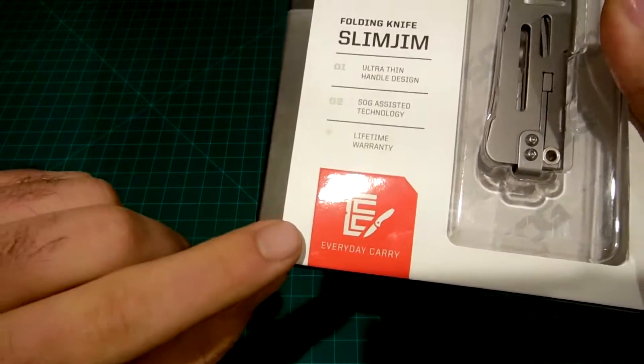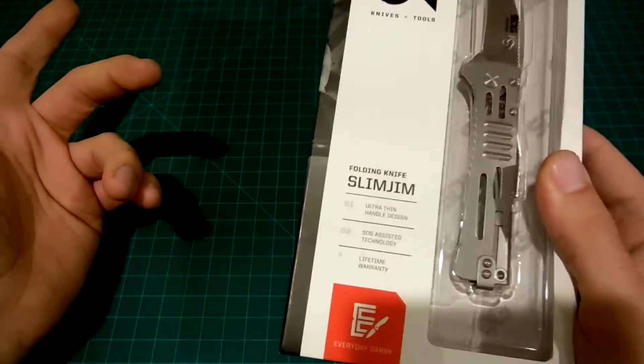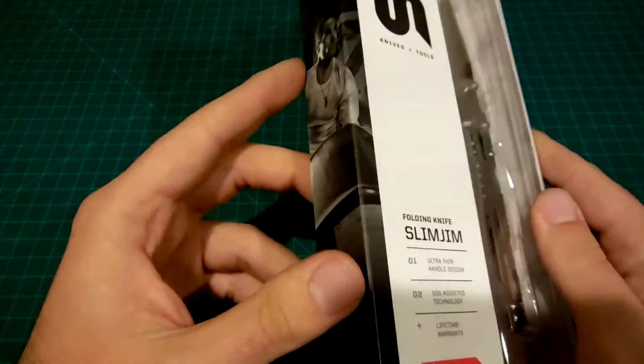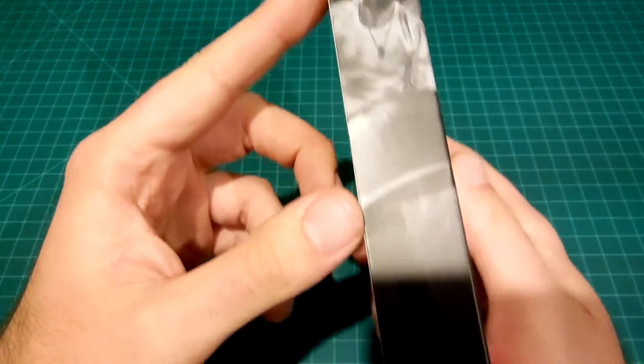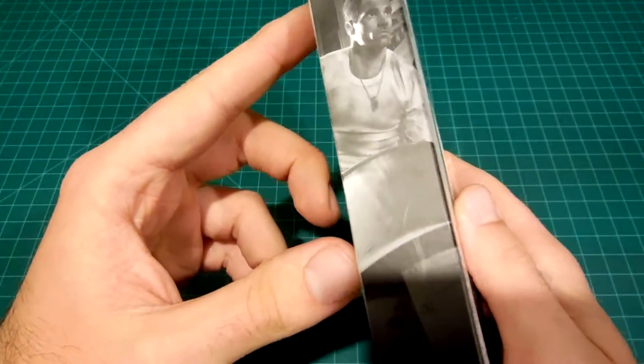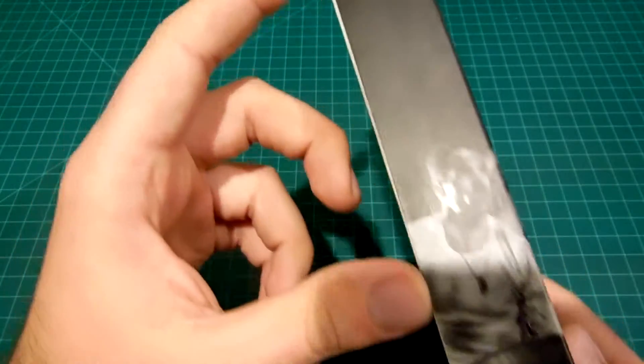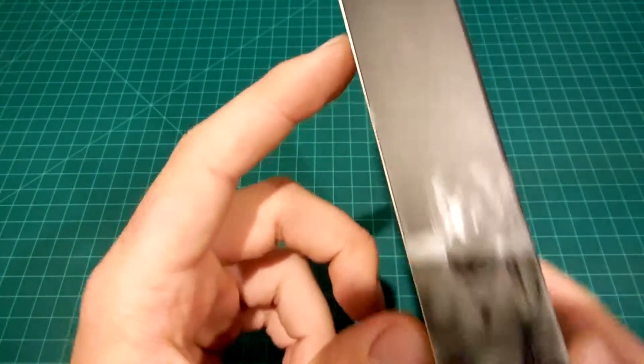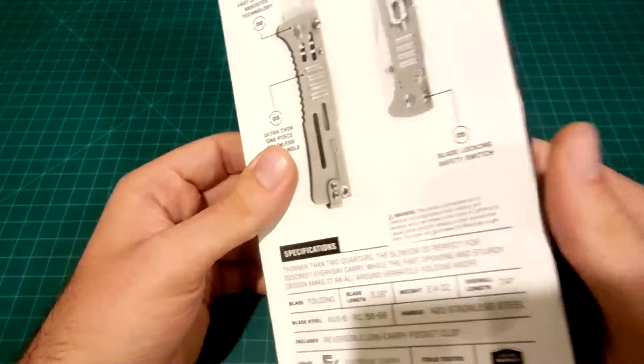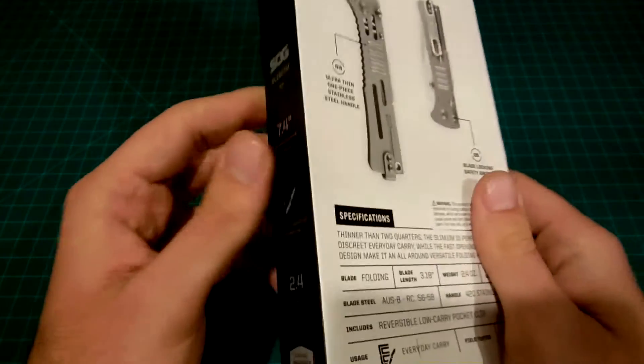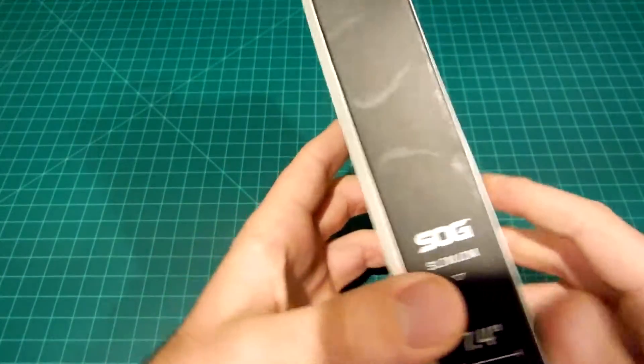The front says folding knife Slim Jim, ultra thin design, SOG assisted technology, and lifetime warranty. It's suggested that this knife is an everyday carry EDC blade. On the side here we got a gentleman pushing an oil drum.